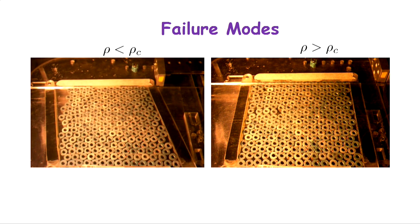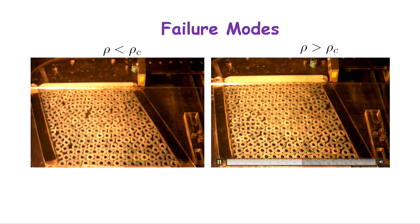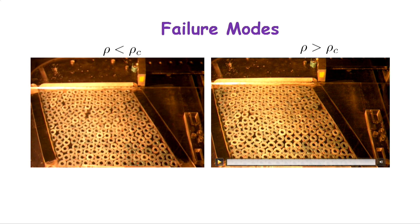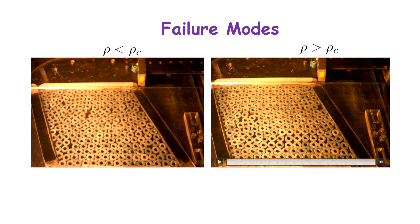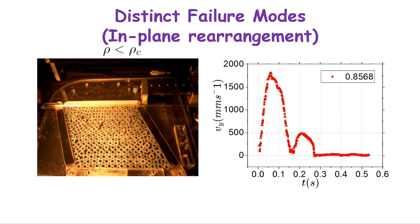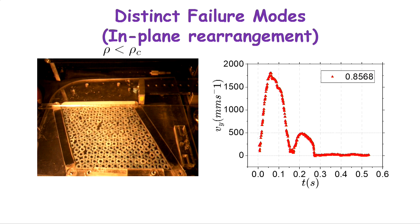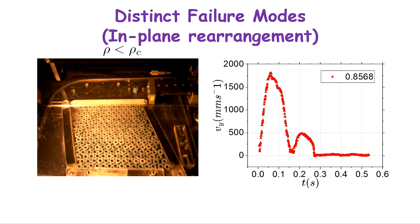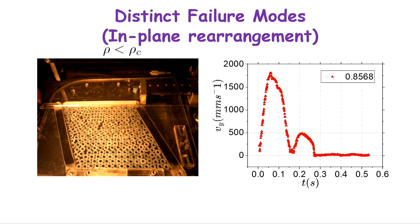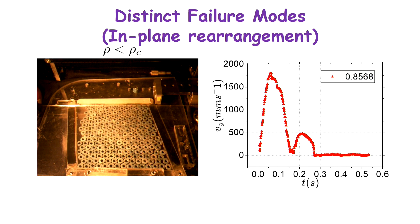Here is the experiment: you come and bang the system for the very first time. Below a critical density you see one behavior; above a critical density another. You can quantify the plunger velocity: initially it increases because it doesn't hit anything, then decreases as resistance builds. At some point the system provides resistance - the force chains start to fail. Once that pattern is found, the velocity slows down, then the chains fully break and reform. This is the in-plane buckling cycle happening.